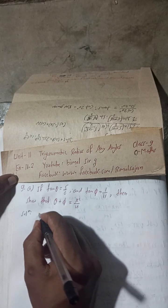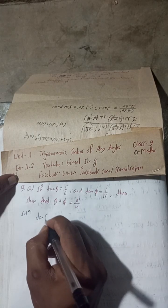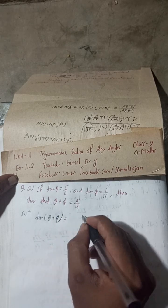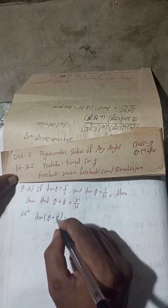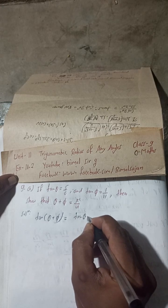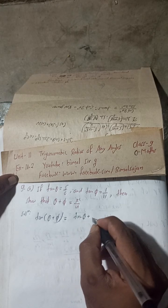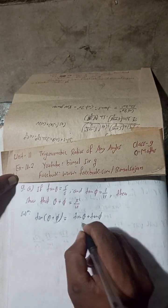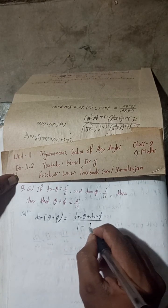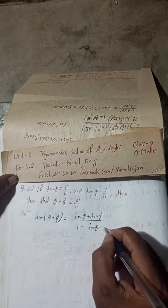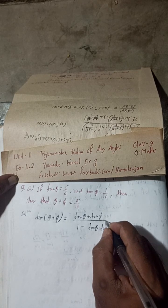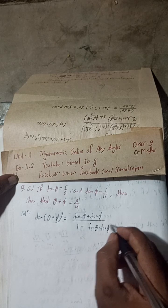To solve this, I will find the value of tan(θ + φ). The formula for tan(θ + φ) is: tan θ + tan φ divided by 1 minus tan θ into tan φ.